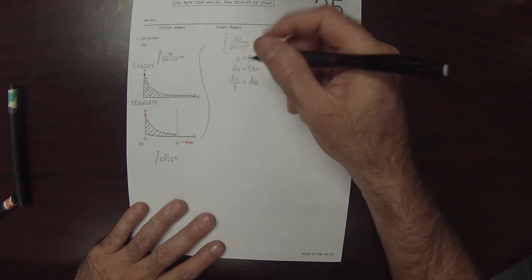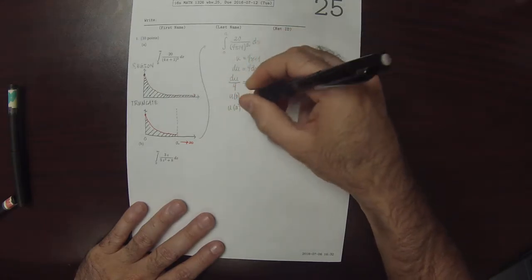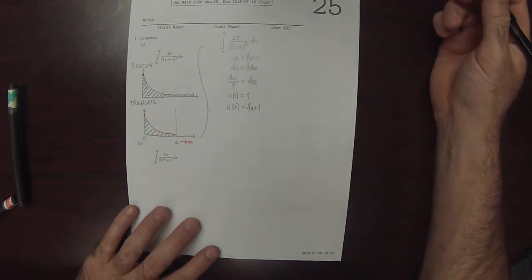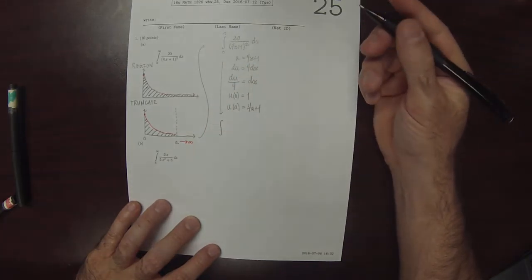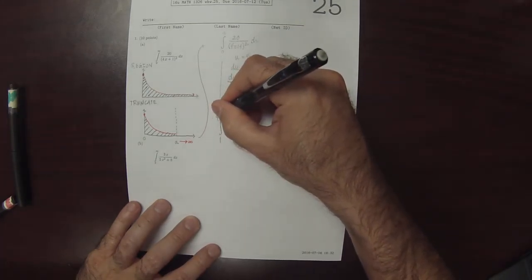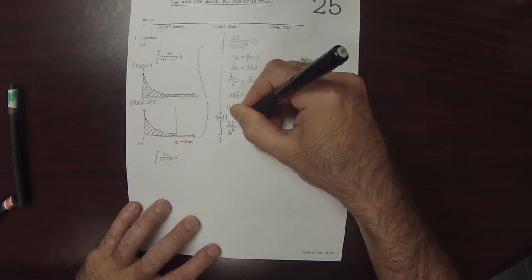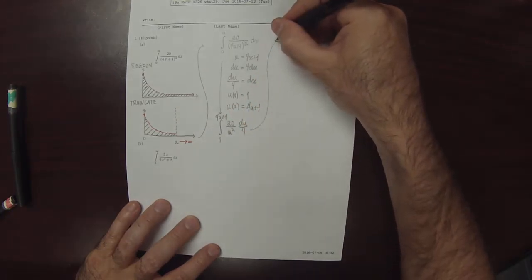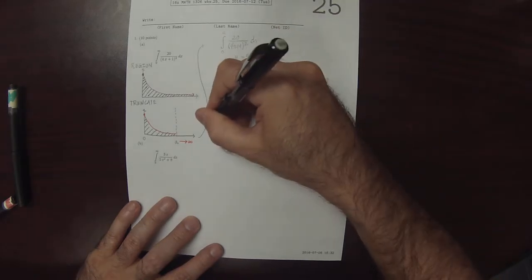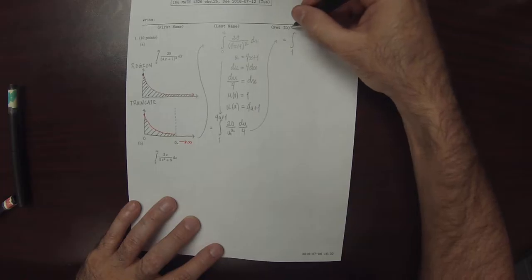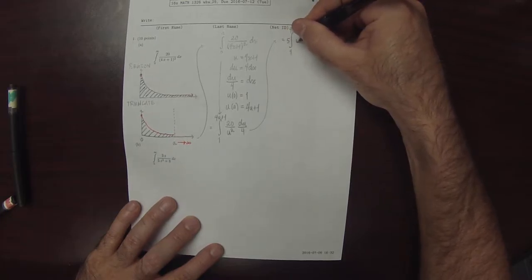I'll go ahead and change the limits. U evaluated at 0 is 1, and u evaluated at A is 4A plus 1. So after the substitution, this becomes the integral from 1 to 4A plus 1 of 20 over u squared, du over 4. Simplifying a little bit, that is the integral from 1 to 4A plus 1 of 5 times u to the negative 2.